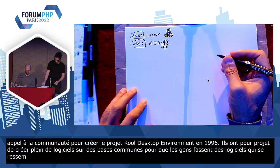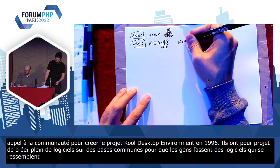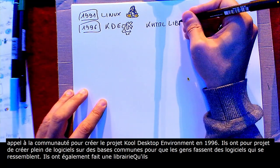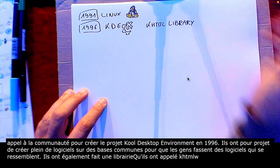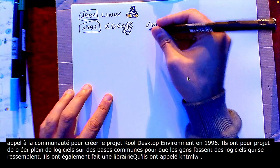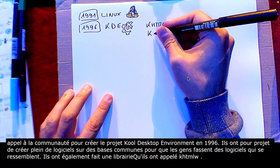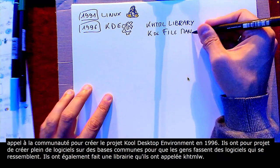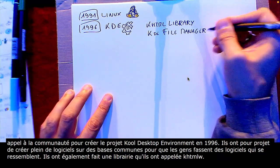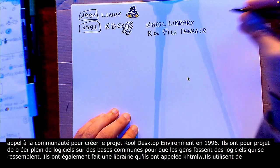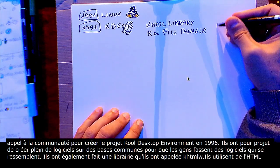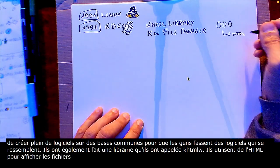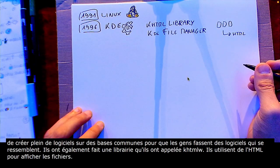Et donc, ils ont également fait une librairie qu'ils ont appelée KHTML Widget pour KDE. Cette librairie va être utilisée dans le cadre de KFM — KDE File Manager — qui va être publié avec la première version de KDE. Comme le nom l'indique, c'est un navigateur de fichiers, mais ils utilisent de l'HTML pour rendre les fichiers. Et du coup, si tu tapes une URL HTTP dans la barre d'adresse, tu peux afficher un document HTML. Le problème, c'est que c'est le moment où le JavaScript et le CSS commencent vraiment à arriver, donc ça ne fait pas du tout un navigateur.